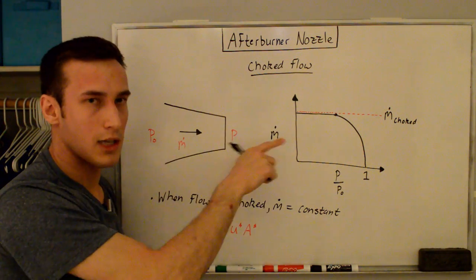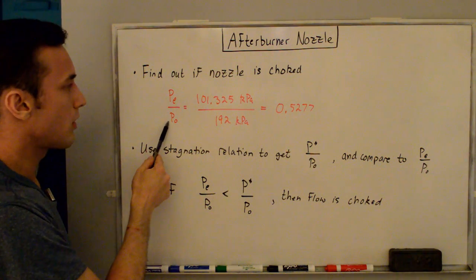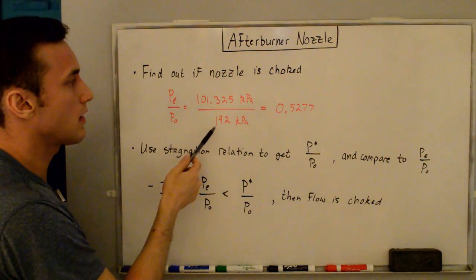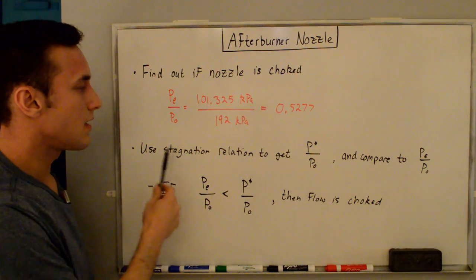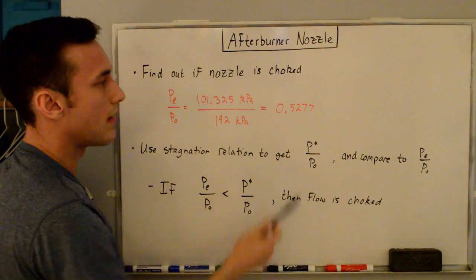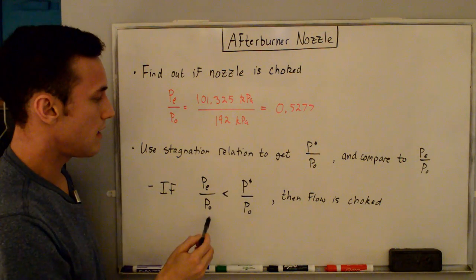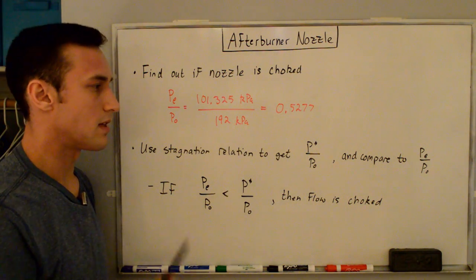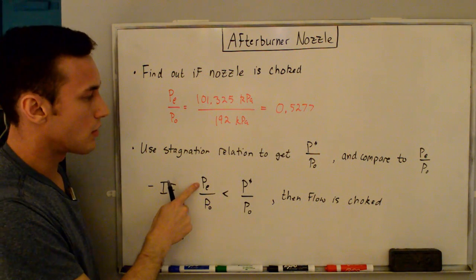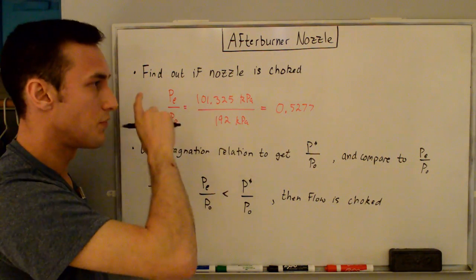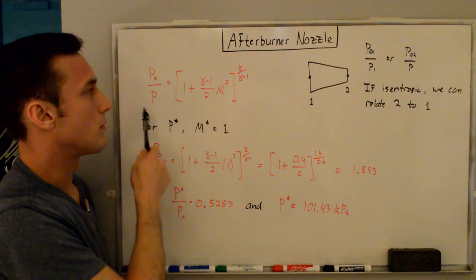The first step is to find out if the nozzle is choked. We compute the exit pressure over stagnation pressure ratio: 101.325 kPa / 192 kPa = 0.5277. Then we use the stagnation relation to get P*/P₀ and compare it to PE/P₀. If PE/P₀ is less than P*/P₀, the flow is choked — because the engine is trying to expand the flow to the exit pressure but physically can't, and P* is the definition of the choked state.